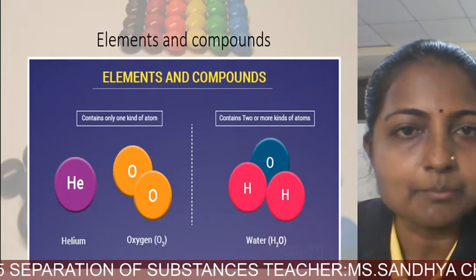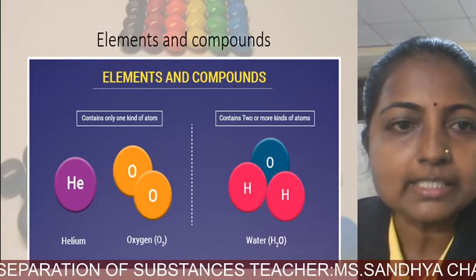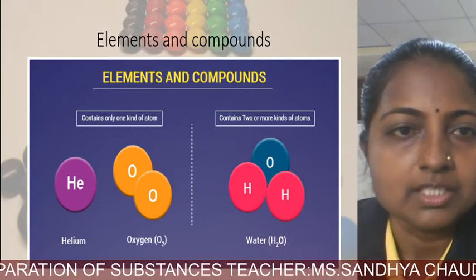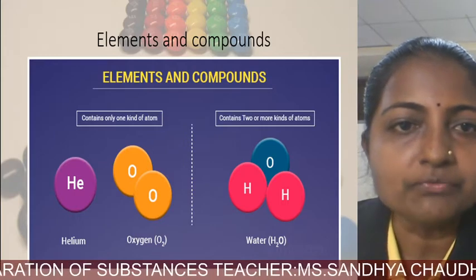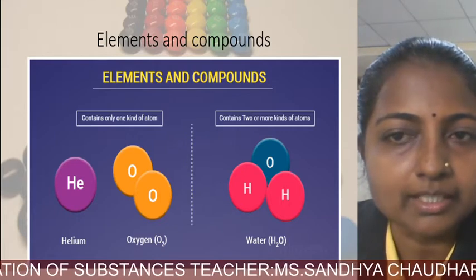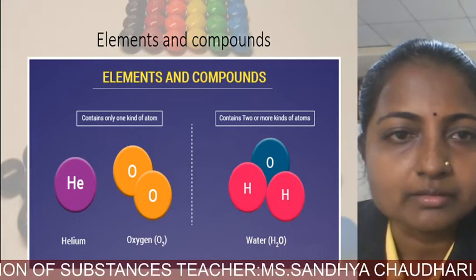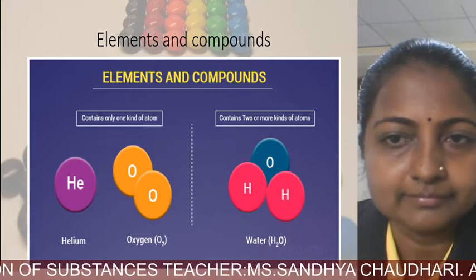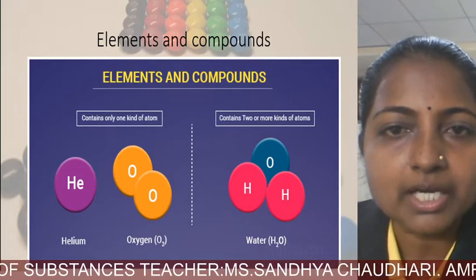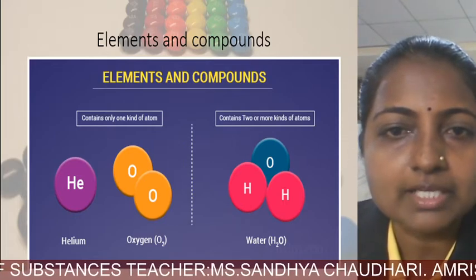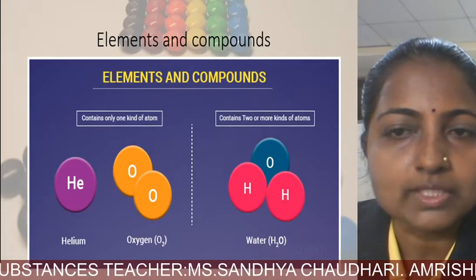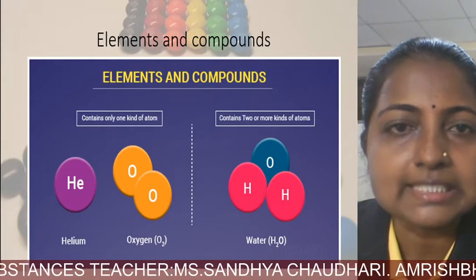In the figure you can see examples of elements and compounds. A helium atom and an oxygen atom illustrate elements — elements contain only one kind of atom. In compounds, two different kinds of atoms are present, such as hydrogen and oxygen together: two molecules of hydrogen and one molecule of oxygen form water, which is a compound.